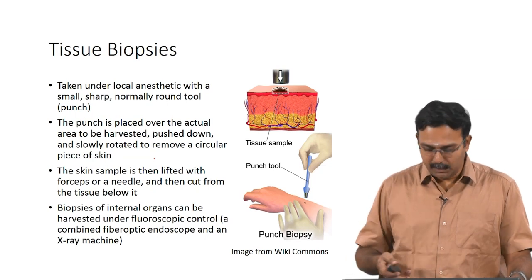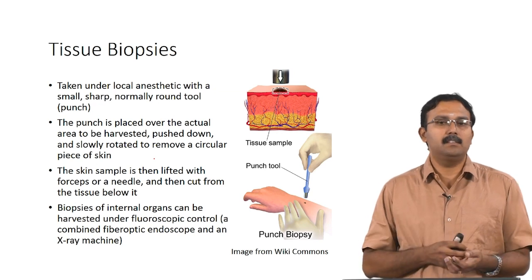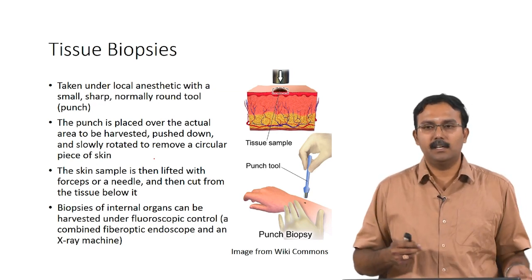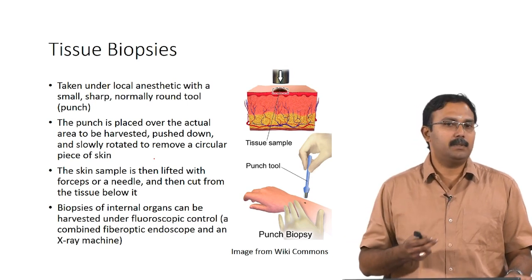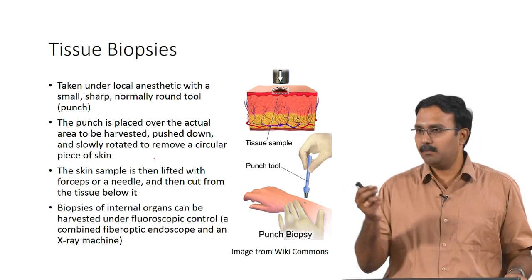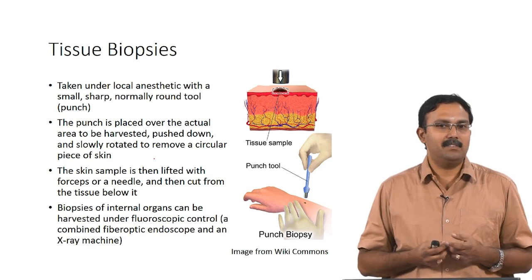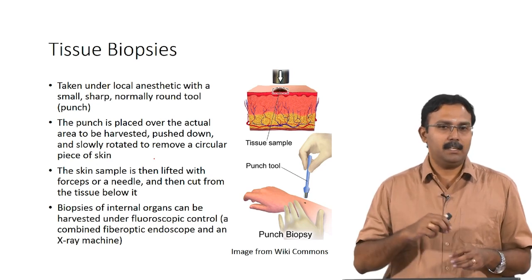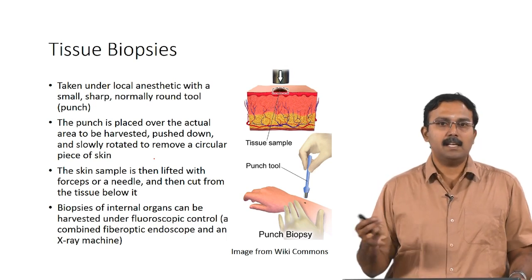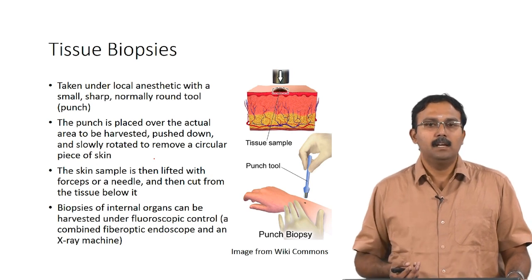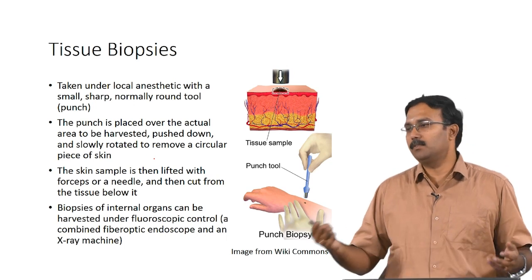The punch biopsy is one of the simplest things done, usually for tissues like skin which are easily cut open. Under local anaesthetic, you take this punch tool — a sharp round-shaped knife — place it over the area to be harvested, push it down and rotate it to remove a circular piece of skin. The skin sample is then lifted with forceps or a needle and cut from the tissue before further processing.